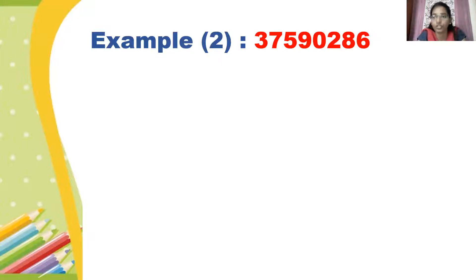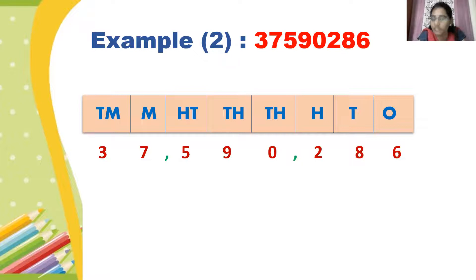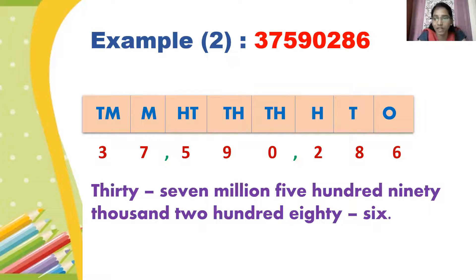Let's take another example. Example two, wherein the digits are 3, 7, 5, 9, 9, 0, 2, 8, 6. So this is a numeral you have to write in words. For that, you must insert commas according to international system of numeration. First, make a note of the places: 1, 10, 100, 1000, 10,000, 100,000, million, and 10 million. Now insert commas to separate the periods. The number formed is 37,590,286. Look at the spelling of 90 children — N-I-N-E-T-Y.